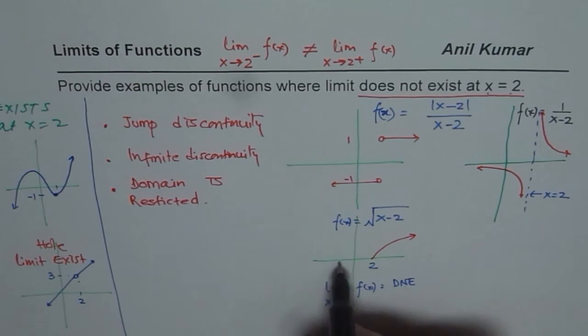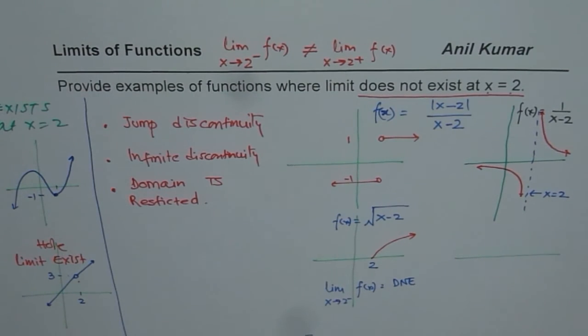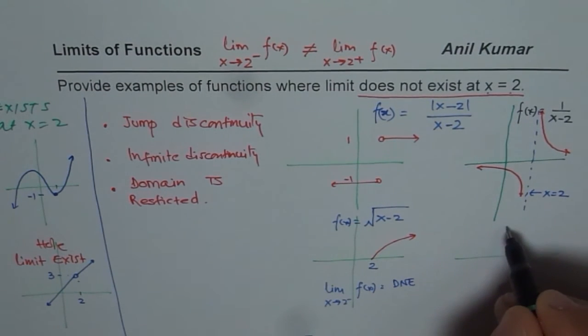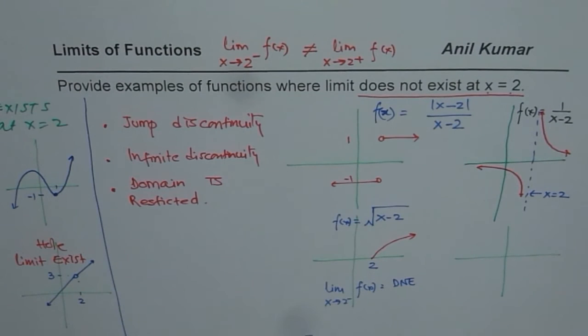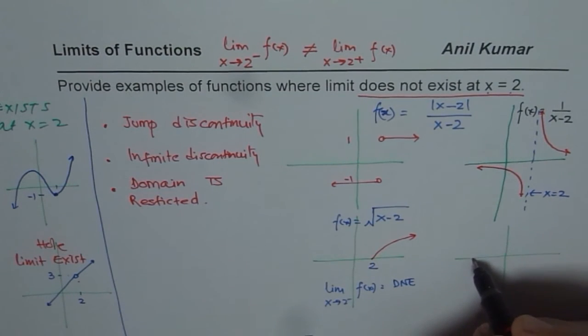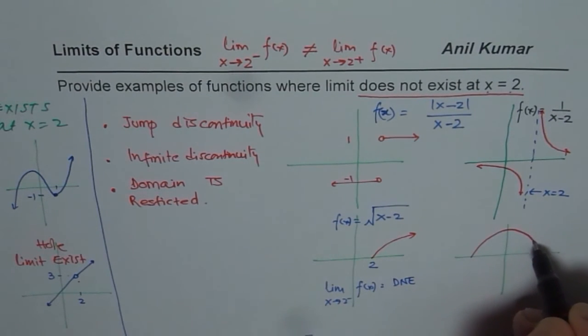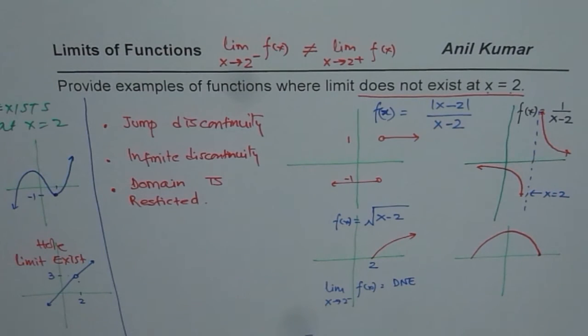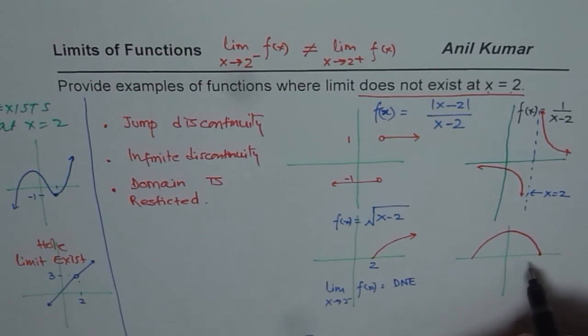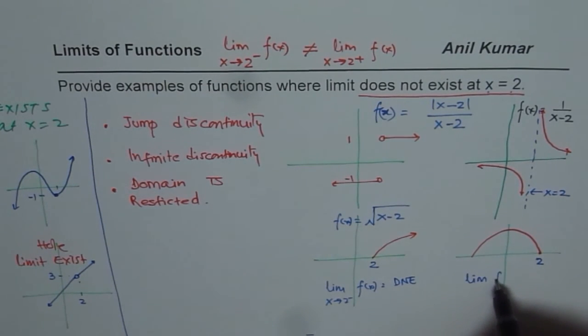Another good example of similar kind could be a semicircle. Let's sketch one and figure it out. If I have a semicircle like this with radius of 2, this point here is 2. In this case, the limit for the function f of x does not exist when you approach 2 from the positive right side, since the domain is restricted.